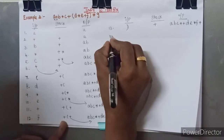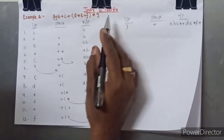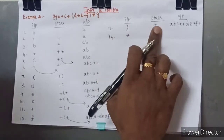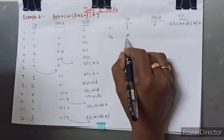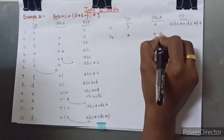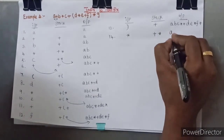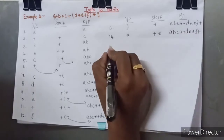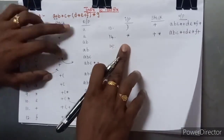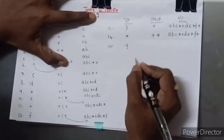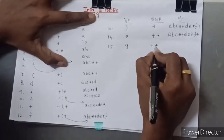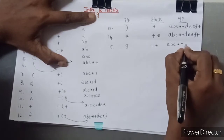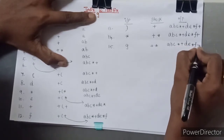The next character is star — a higher-precedence symbol. The top of the stack is plus, which has lower precedence, so the star is pushed onto the plus. The output remains unchanged. After this, we read G, which is an operand. There is no change to the stack, and G is written to the output: A B C star plus D E star F plus G.